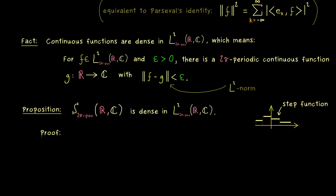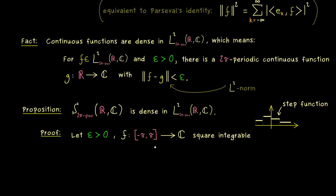Let's begin the proof of this proposition. Assume we have an arbitrary epsilon greater than zero and an arbitrary square integrable function f defined on the closed interval minus π to π — this function represents an equivalence class in our L2 space. We want to show that every such function can be approximated by a step function with respect to the L2 norm. We can already use the fact from before, which tells us that we can approximate f with a continuous function g.